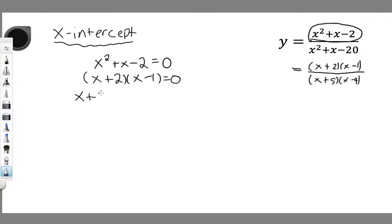x plus 2 is equal to 0, and x minus 1 is equal to 0. I end up with x is equal to negative 2, and x is equal to 1.